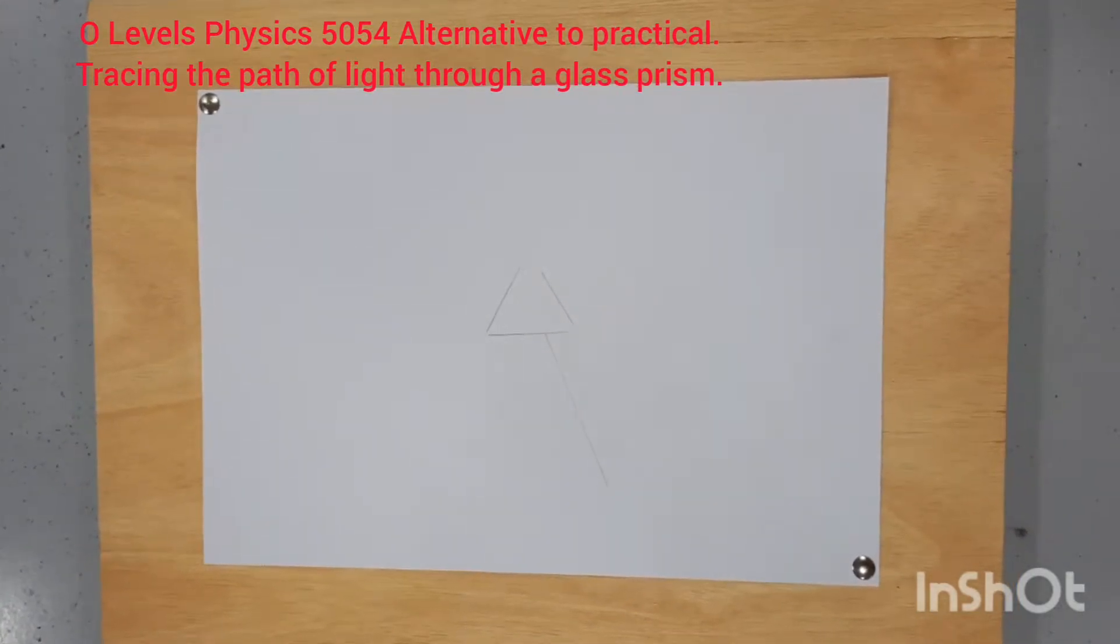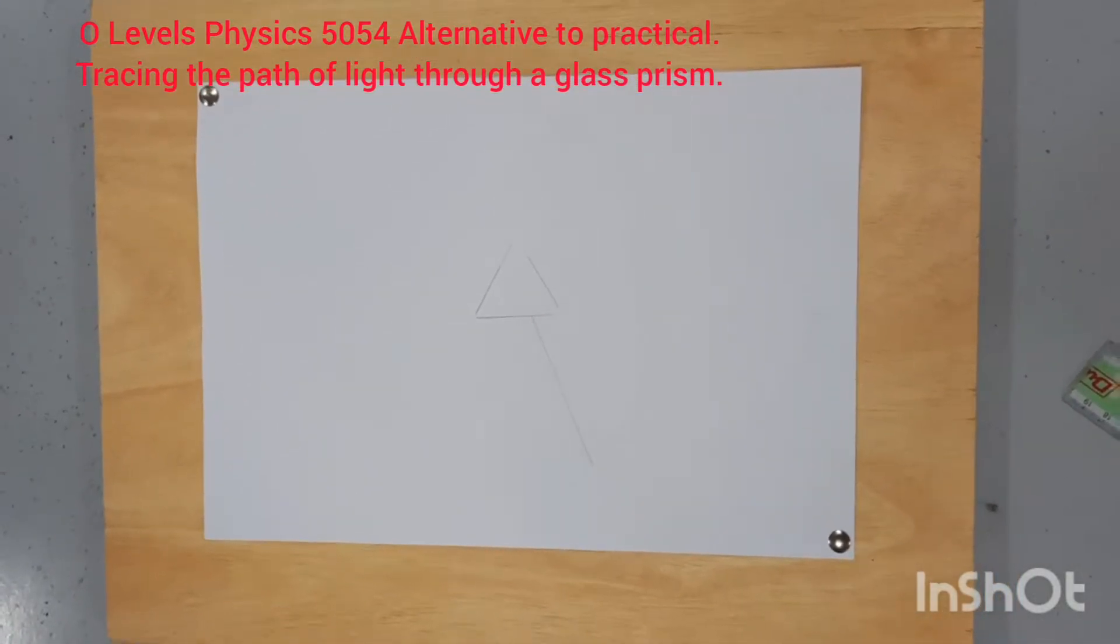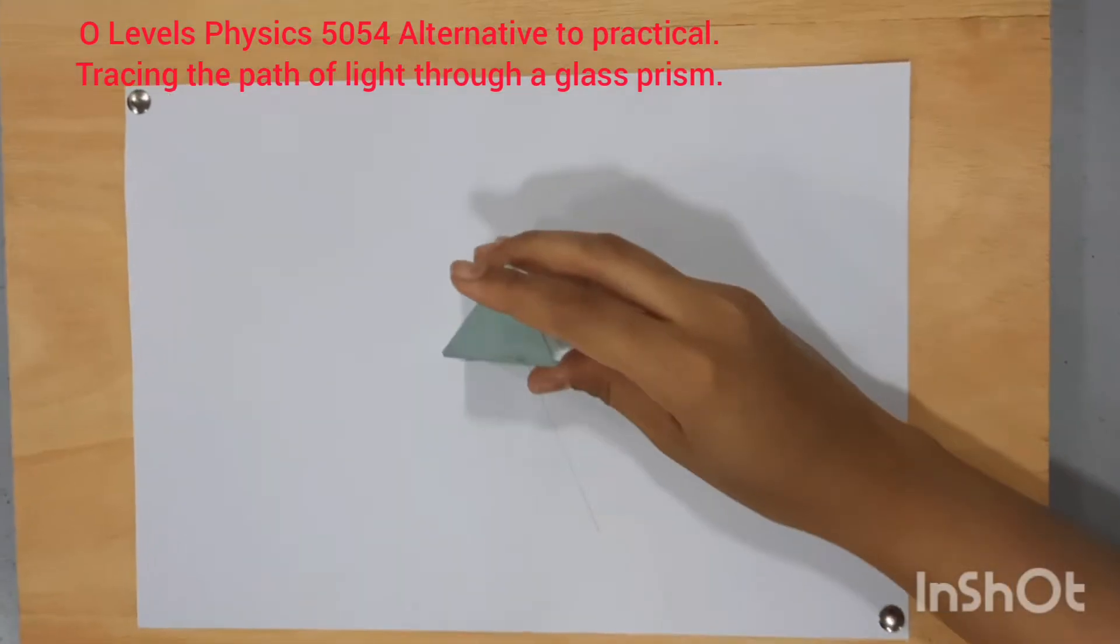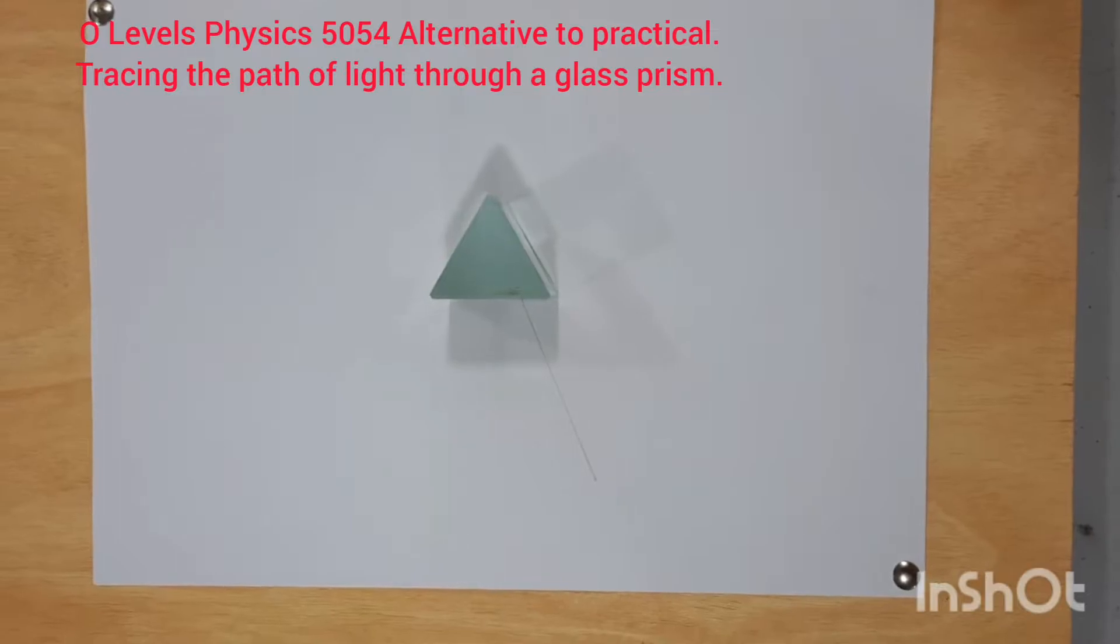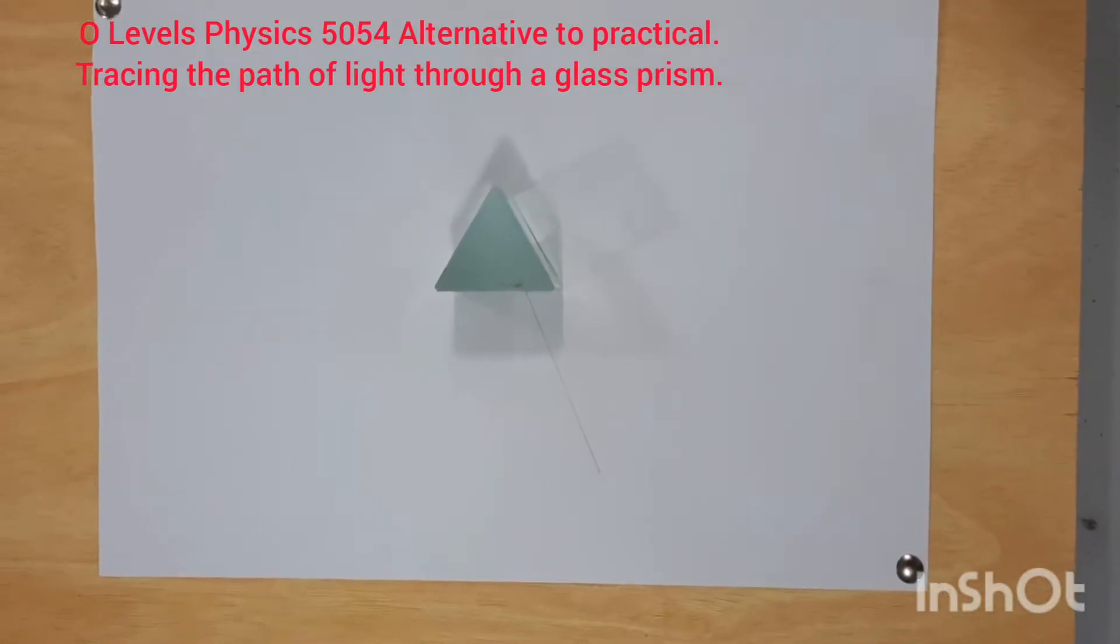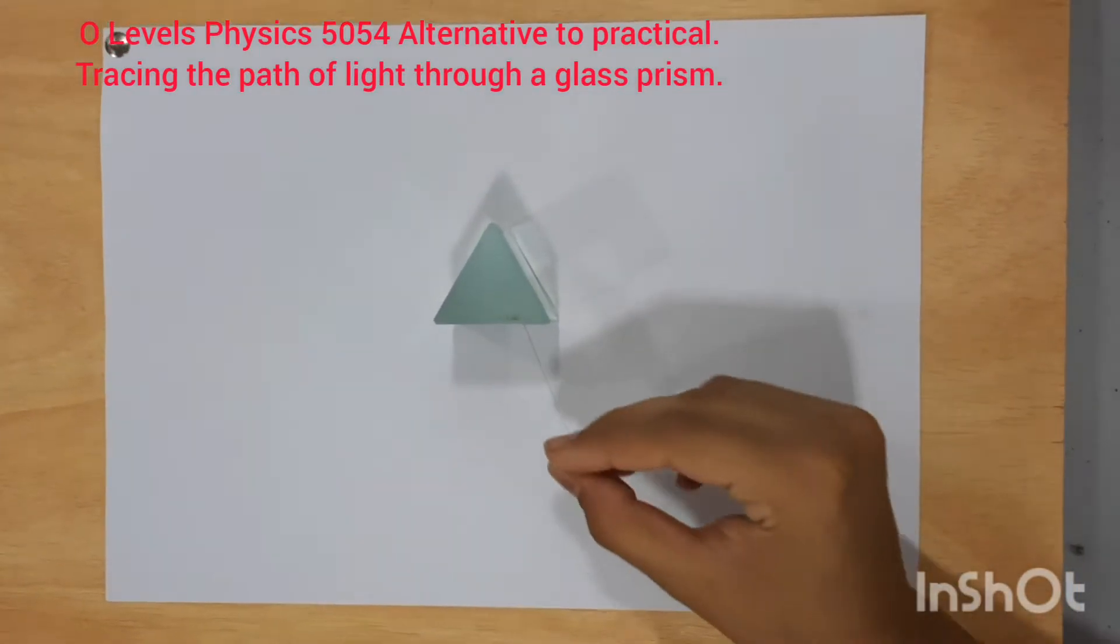Place the prism back on its marking. On the straight line which you have marked, place two pins: pin one and pin two.